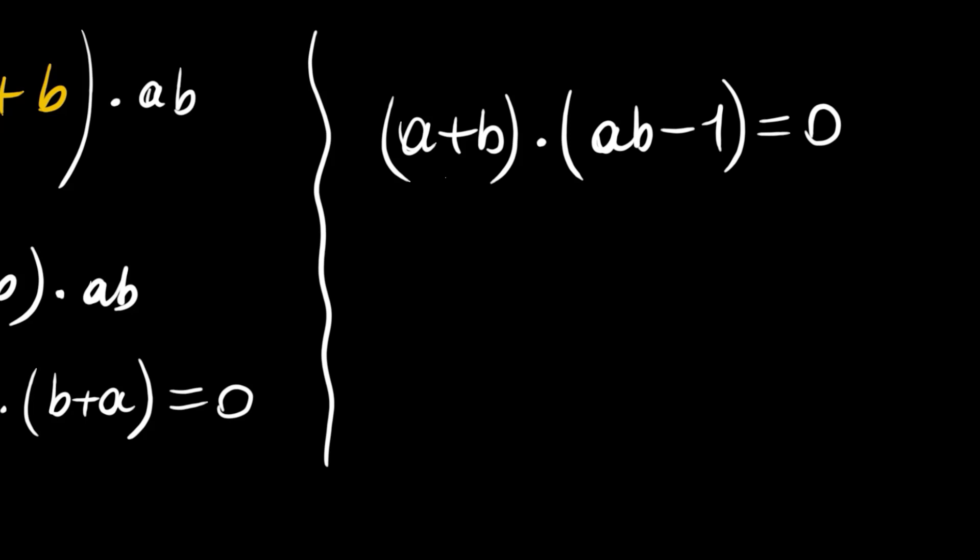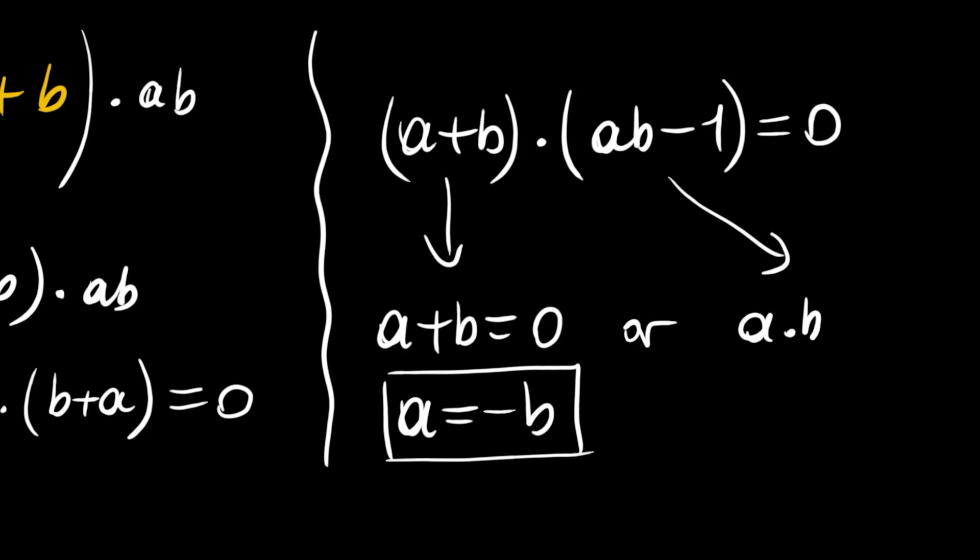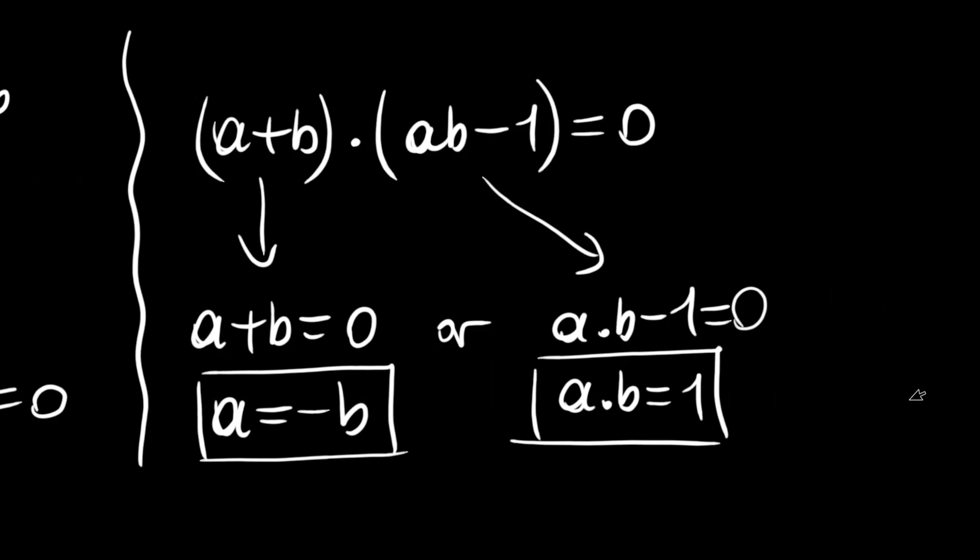So we have two possibilities: whether a plus b is equal to zero, a is equal to negative b, or ab minus one is equal to zero, ab is equal to one. Let me try some values.